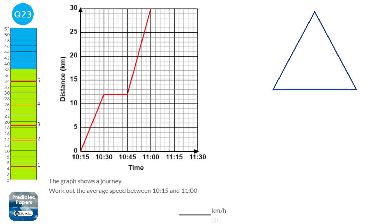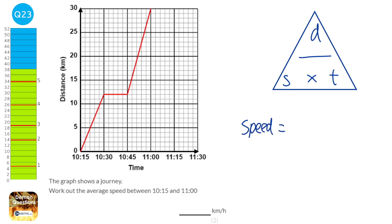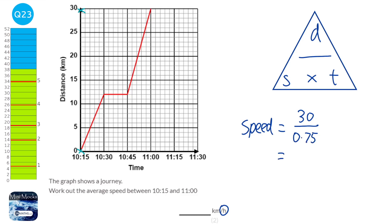Speed equals distance over time, and average speed is the total distance over the total time. The distance goes from 0 to 30, so the total distance is 30. The time starts at 10:15 and ends at 11:00, so that's 45 minutes, or 0.75 hours. So 30 divided by 0.75 equals 40 kilometres per hour.